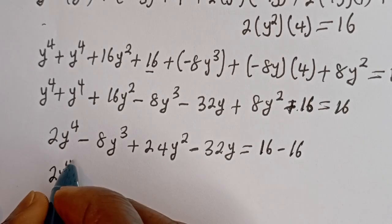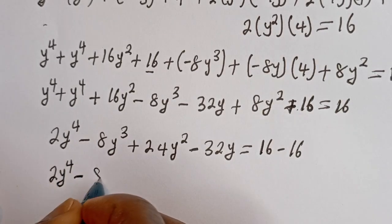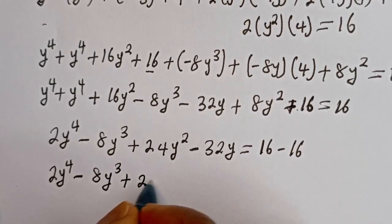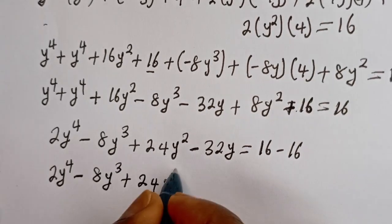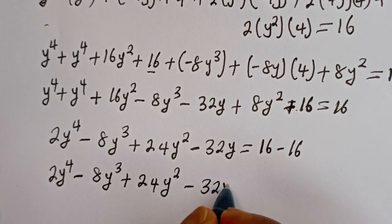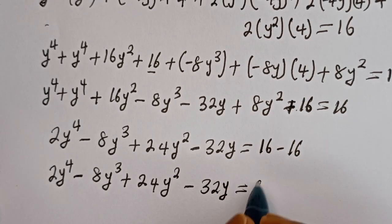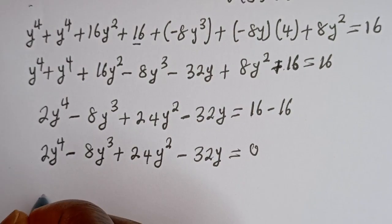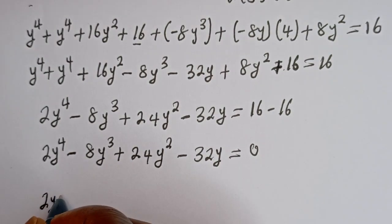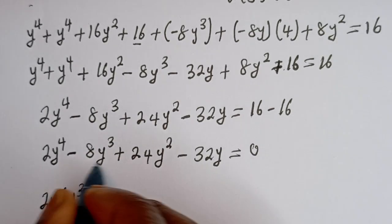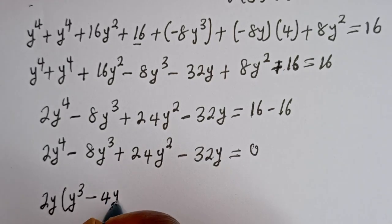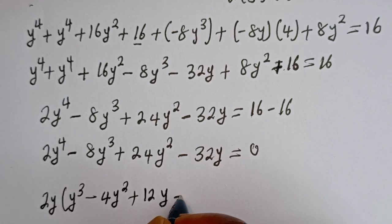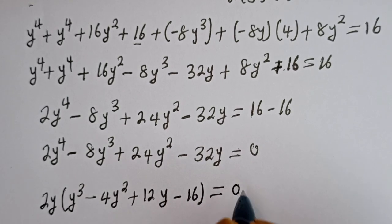So we get 2y⁴ minus 8y³ plus 24y² minus 32y is equal to 16 minus 16, that is 0. Then from here, 2y is common, so we have 2y bracket (y³ - 4y² + 12y - 16) is equal to 0.